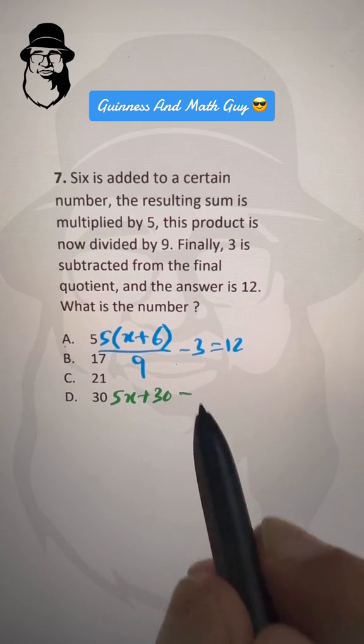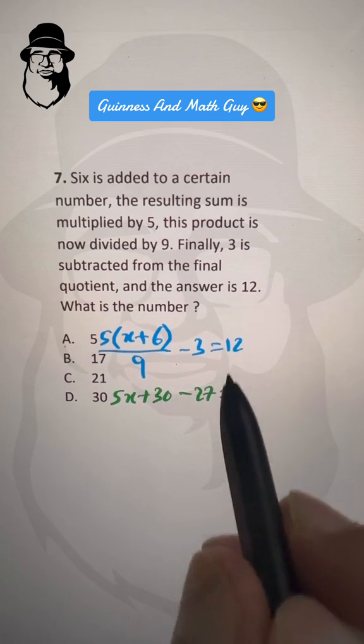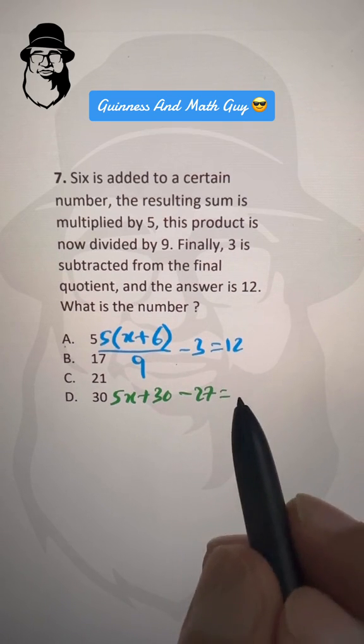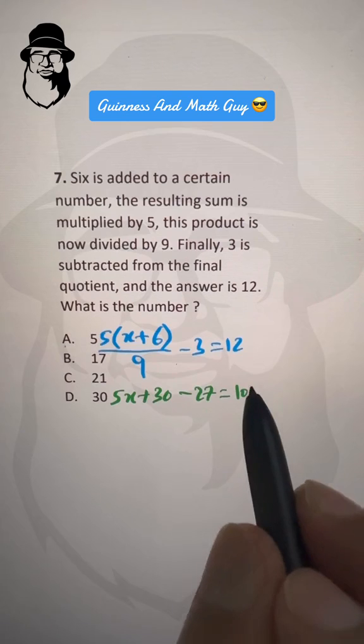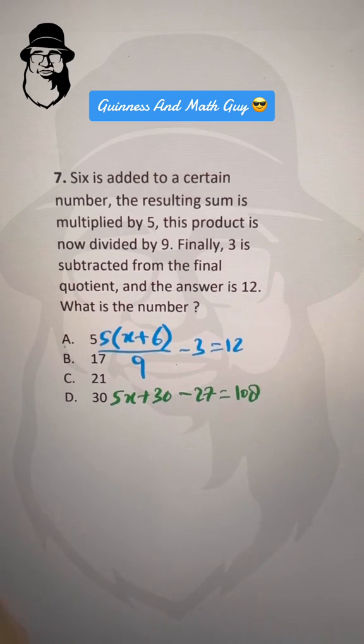And then 9 times 3 is 27, equals 9 times 12. 9 times 10 is 90, and 9 times 2 is 18. 90 and 18 is 108, if you don't know the 12 times table.